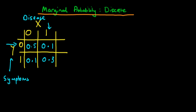We're now talking about a probability mass function which is multivariate — there's more than one random variable at play. We can define something called a joint probability before going on to discuss what is meant by a marginal probability.